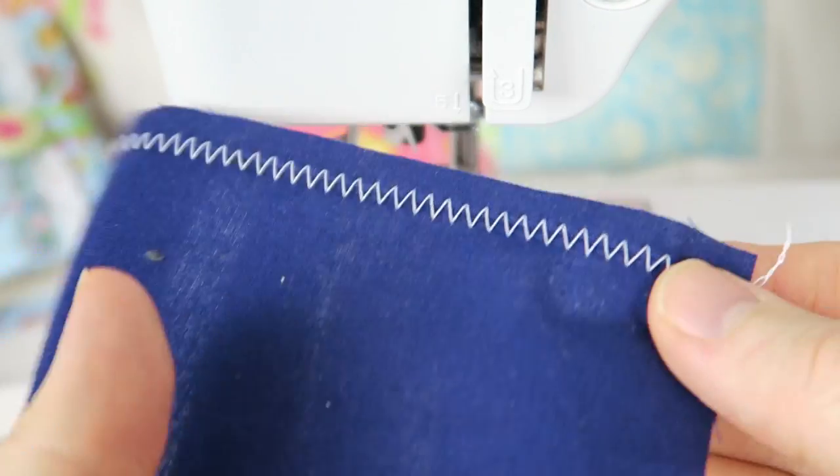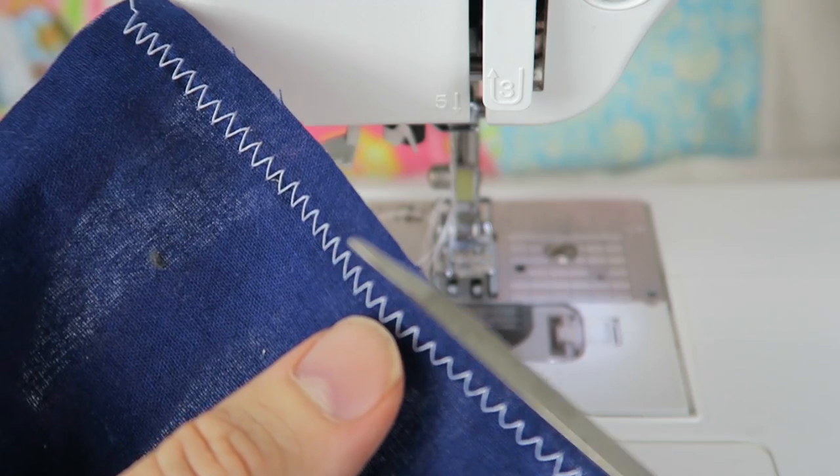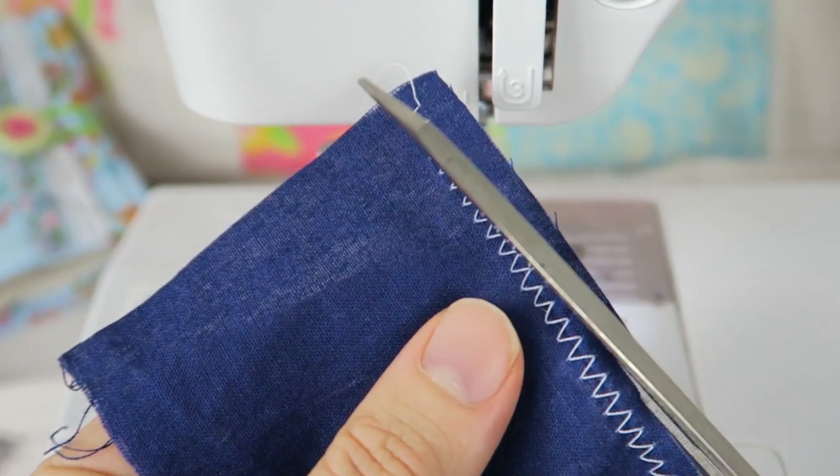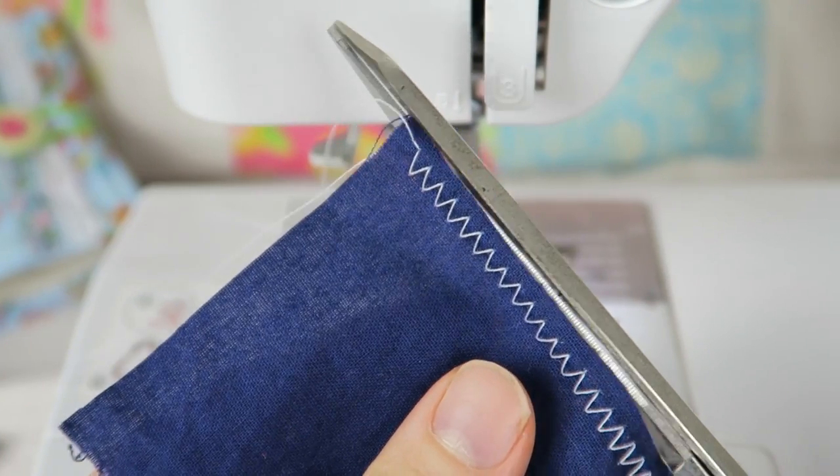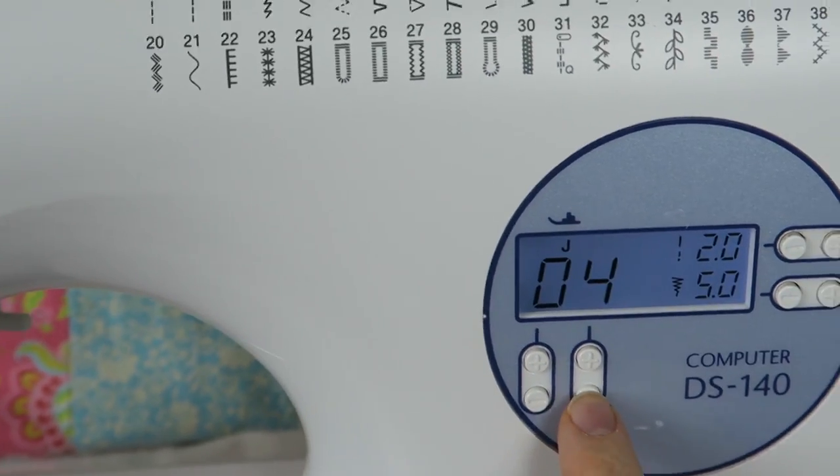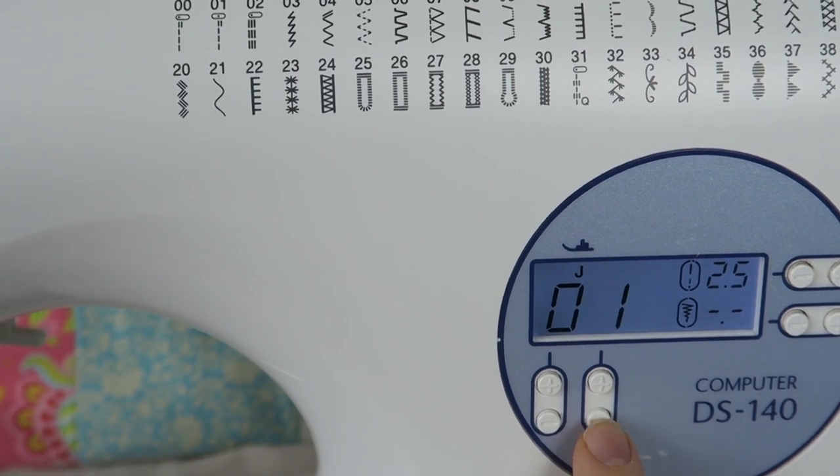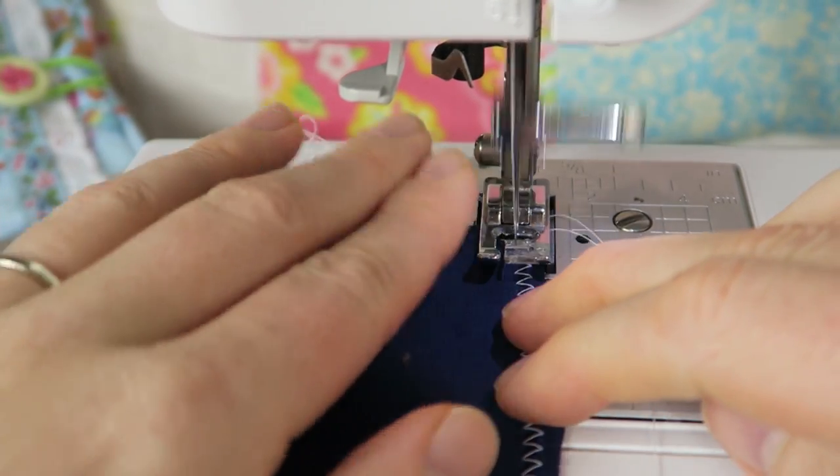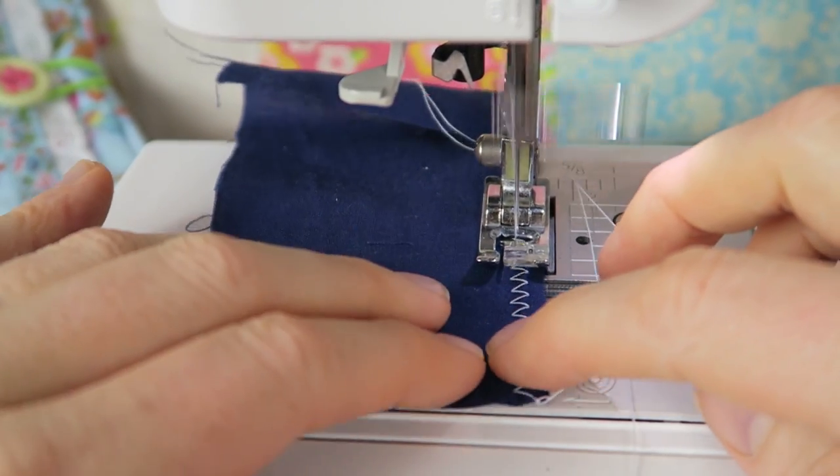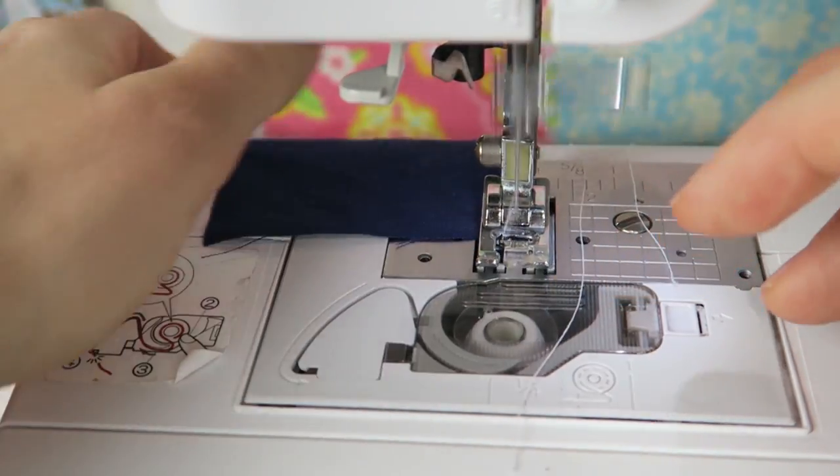This is what it looks like, and all this overcasting and zigzag stitching is used to prevent the fabric from fraying at the fabric edge. So if you want to make the stitch extra secure, you can just go over it with a straight stitch so that the zigzag stitch will be completely secure and your fabric is safe from fraying.